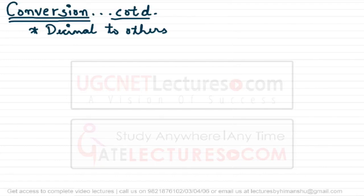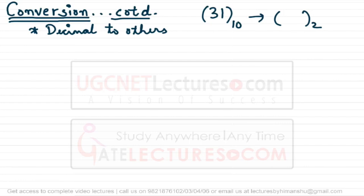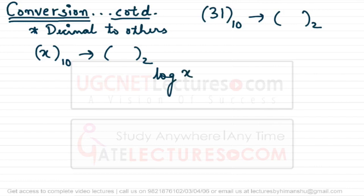We have already seen the conventional method of converting a decimal number to other base systems, including decimal to binary with some examples. The problem with the conventional method is that it may be too lengthy. For example, if you have to convert 31 to binary, you have to divide repeatedly by 2, which can take a lot of time. For a number x of base 10 converted to base 2, it is going to take log x base 2 steps.